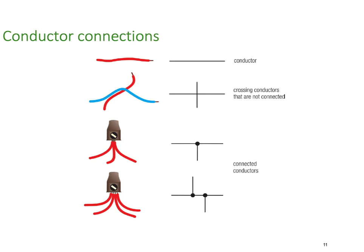For conductor connections: a single conductor is straightforward. If two wires cross but are not connected, you just draw them crossing. But if wires are connected together through a terminal system, we put a dot to indicate the connection. With four wires all connected together, we use dots to indicate the wires are connected.